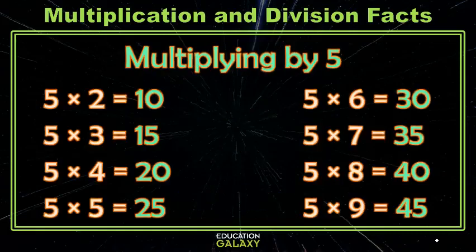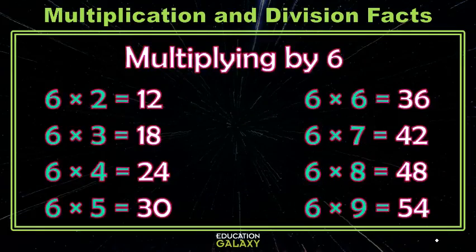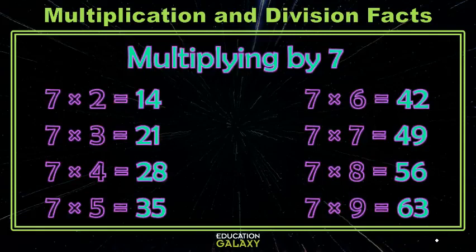The 5s are kind of fun, we remember those from skip counting: 5, 10, 15, 20, and so on. The 6s may be a little trickier, but the 7s seem to be what a lot of people don't remember, and most of these we know already.